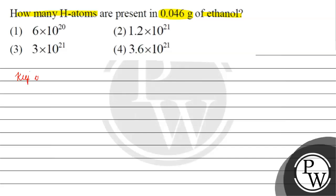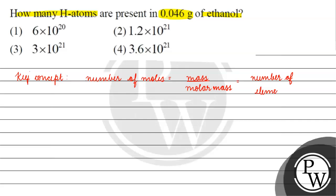The key concept for this question is: number of moles equals mass divided by molar mass. It is also equal to number of elementary entities divided by Avogadro's number.